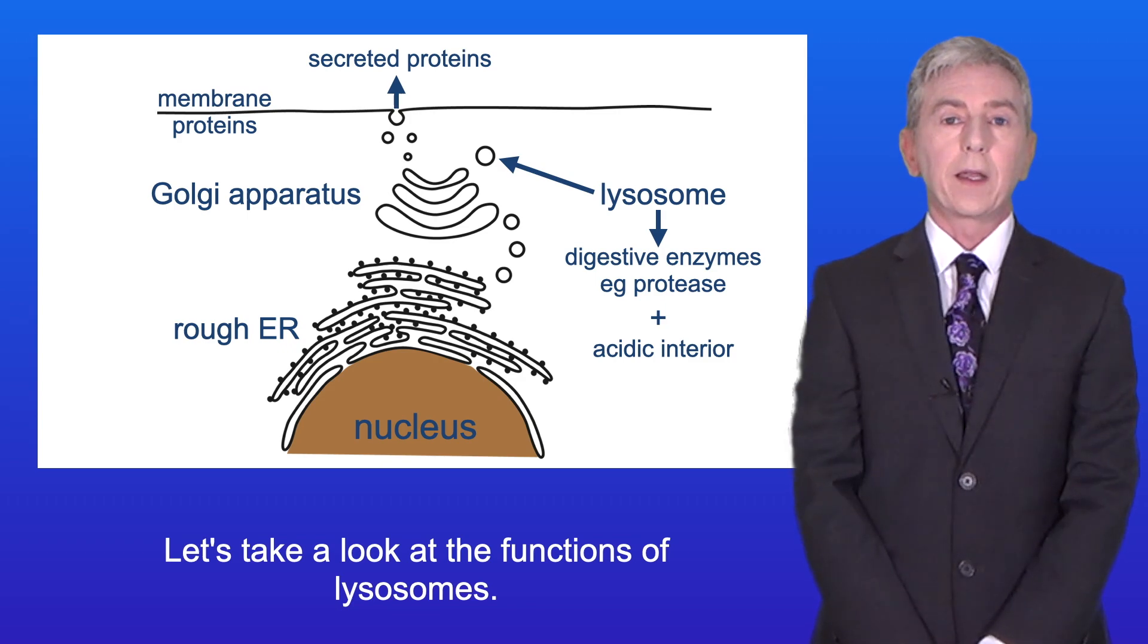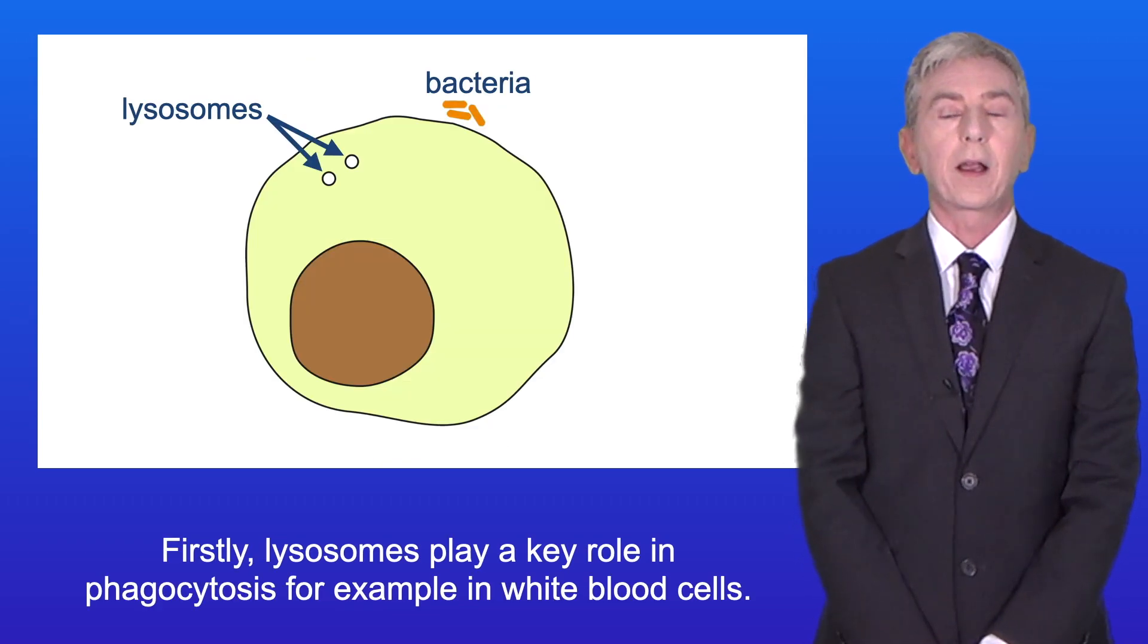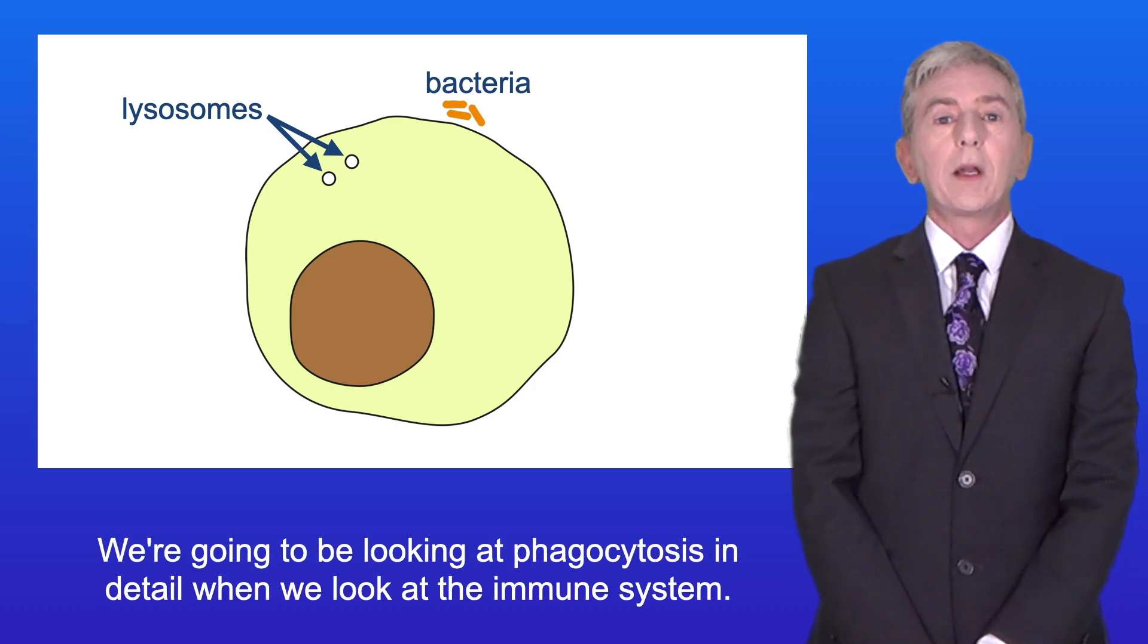So let's take a look at the functions of lysosomes. Firstly, lysosomes play a key role in phagocytosis, for example in white blood cells. We're going to be looking at phagocytosis in detail when we look at the immune system.